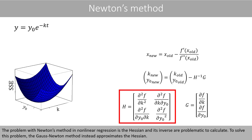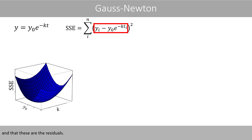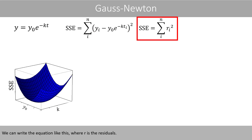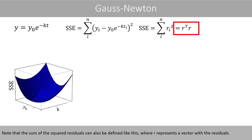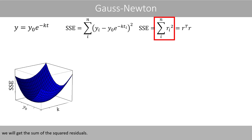The problem with Newton's method in nonlinear regression is that the Hessian matrix and its inverse are problematic to calculate. To solve this, the Gauss-Newton method instead approximates the Hessian. The sum of the squared residuals can be written as r-transpose times r, where r represents a vector of residuals. Multiplying the residual vector with its transpose gives the sum of the squared residuals.